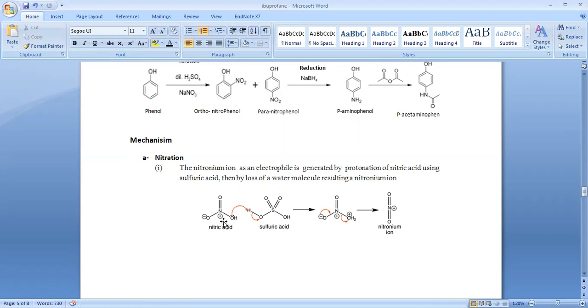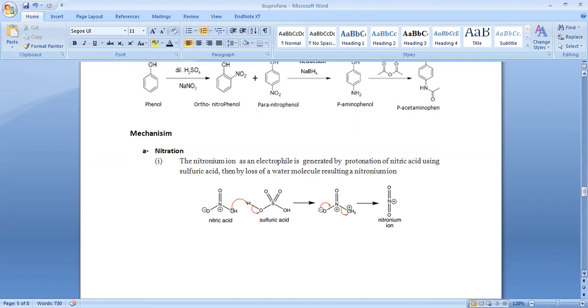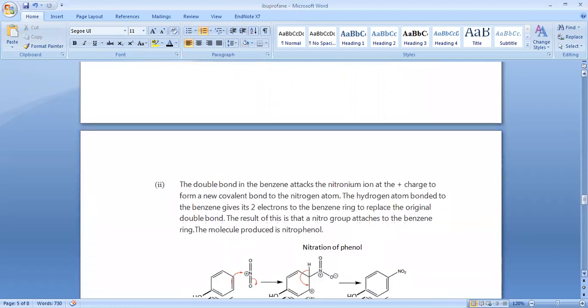According to Bronsted-Lowry, nitric acid acts as a base because the proton is added. Sulfuric acid provides the proton, and this is the base. As a result, we get this intermediate. The negative charge, the electron on oxygen, shifts to nitrogen. As a result, we get the nitronium ion, which acts as an electrophile.